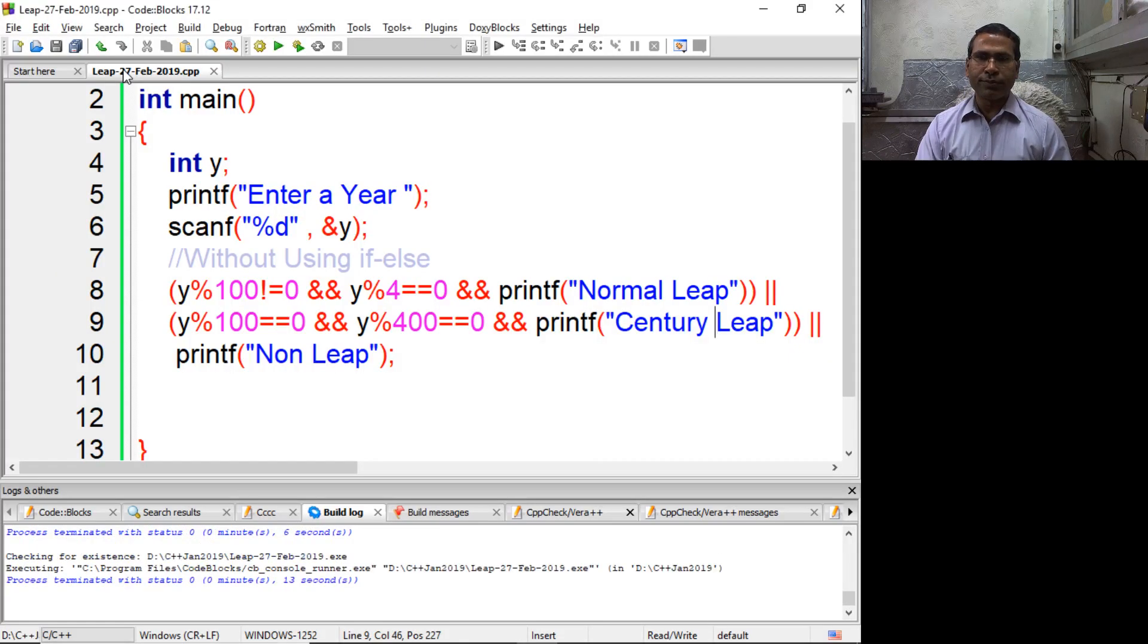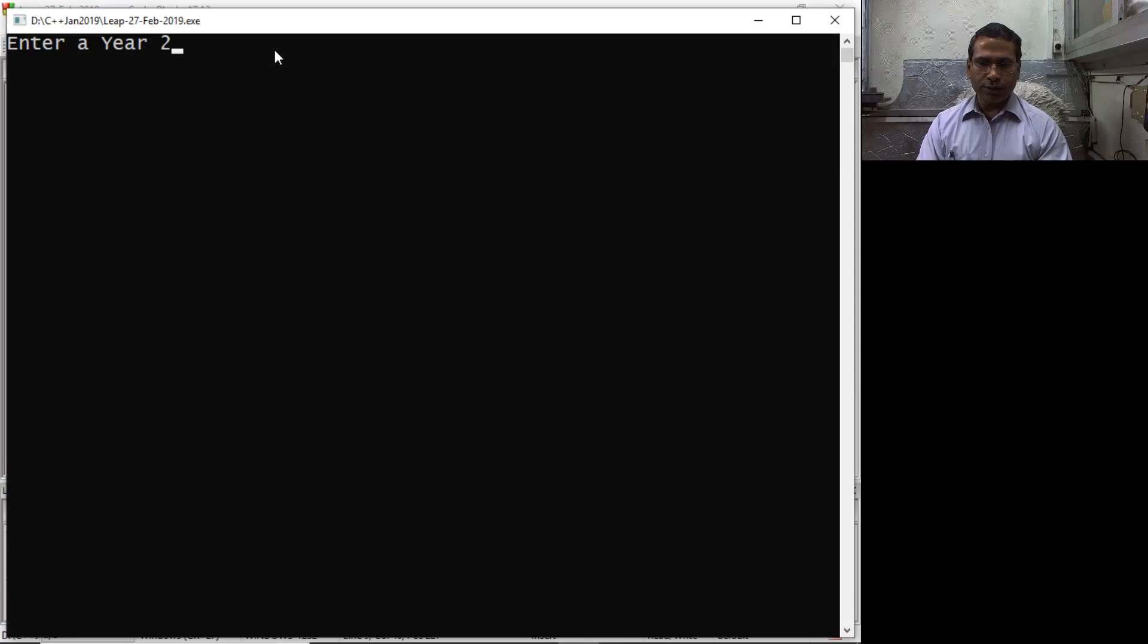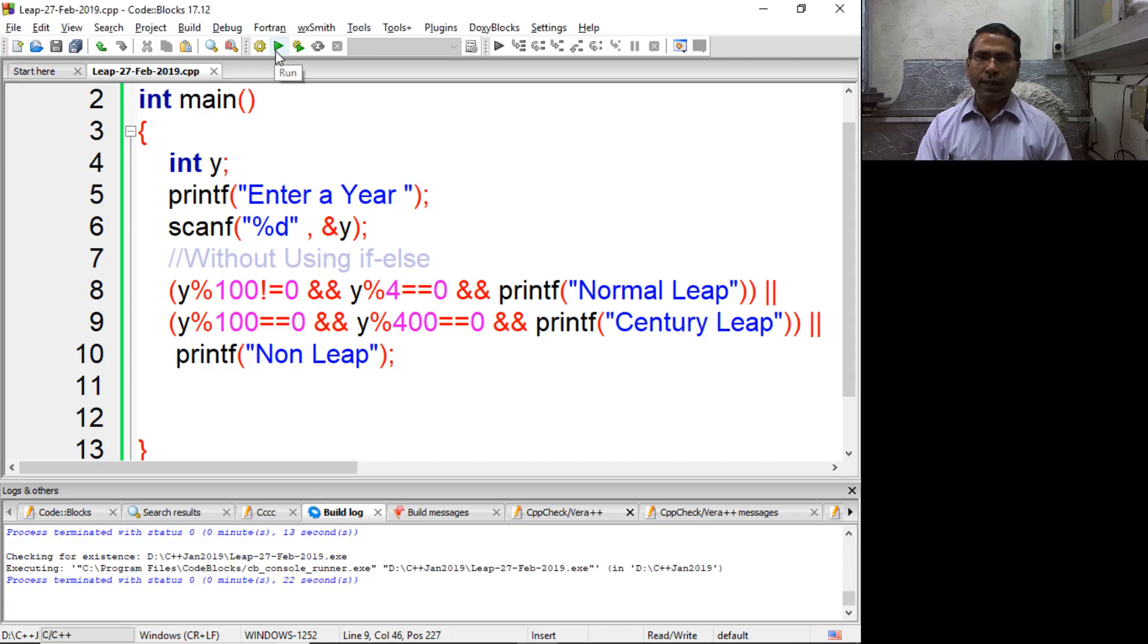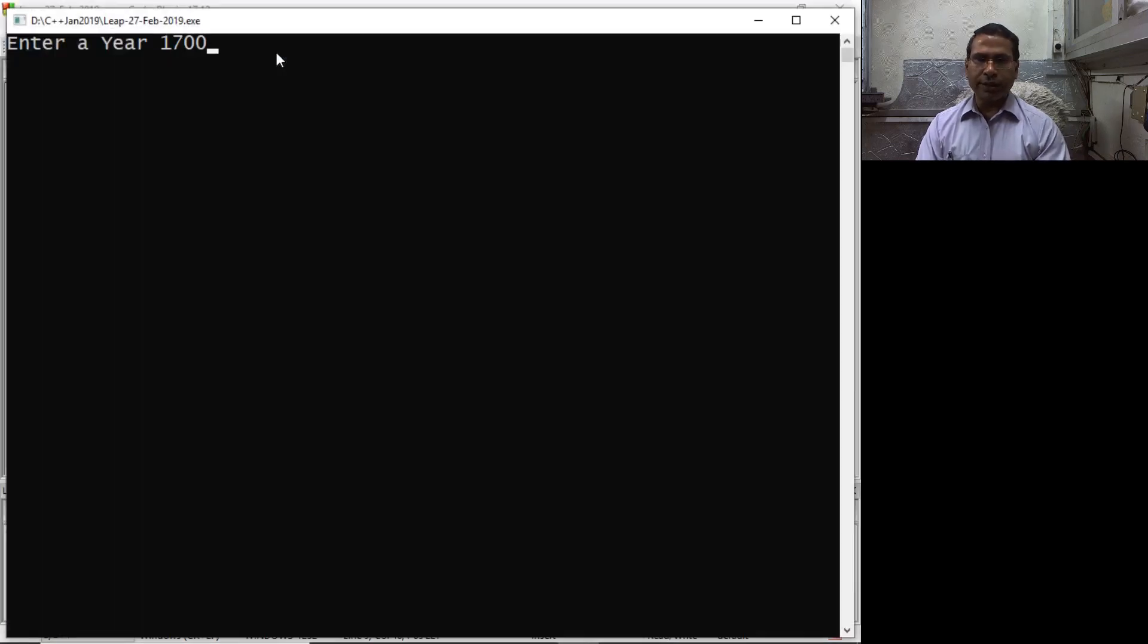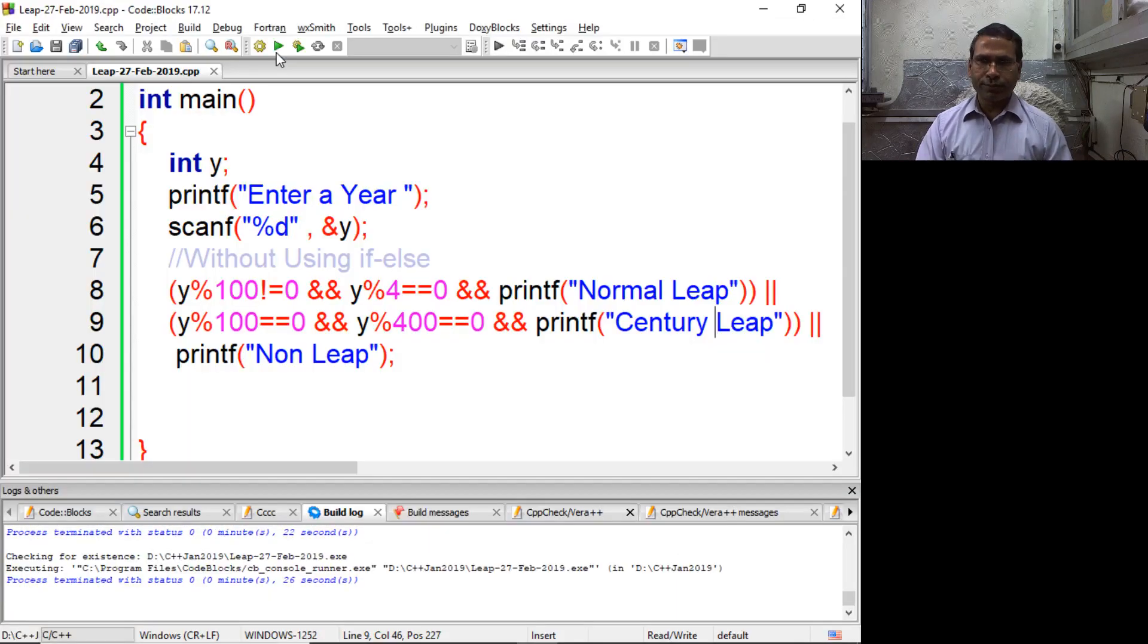First 2016, it's a normal leap year. Year 2000, it's a century leap year. Similarly 2019, it's a normal leap year. And year 1700, it's a normal leap year.